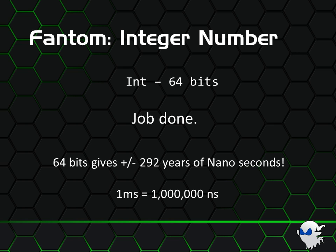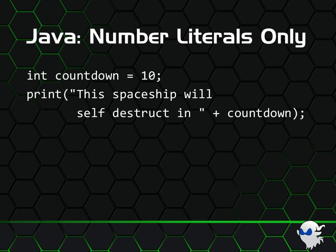Fantom stores time as an int. It represents nanoseconds since the year 2000, and that gives us plus and minus 300 years at a pretty high precision — because 1 millisecond is equal to 1 million nanoseconds. Now, when it comes to literals — that is, types understood by the compiler — most languages only recognize numbers, booleans, and strings.